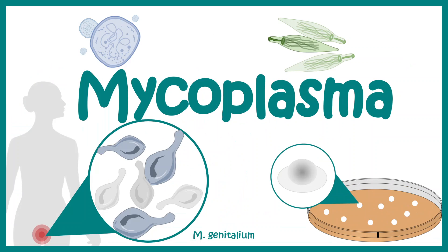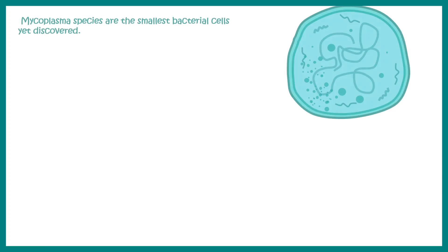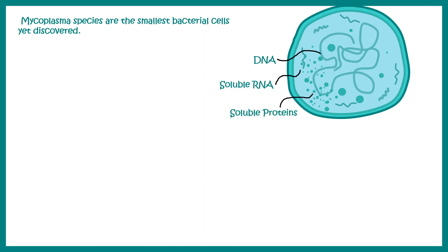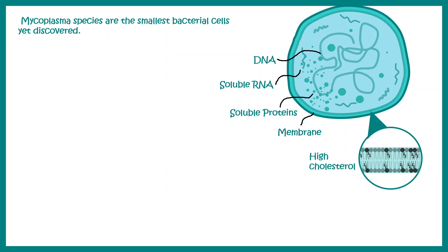In this video we'll talk about mycoplasma. Mycoplasma are so far the smallest known bacterial species on planet Earth. They have a very simple structure. Genetic material DNA, soluble RNA and proteins are encapsulated in a trilaminar membrane. If we zoom into the membrane, we can understand this membrane is very densely packed with cholesterol.